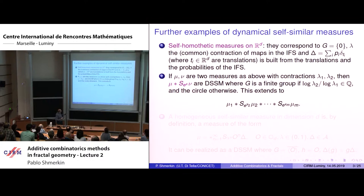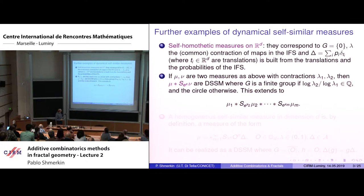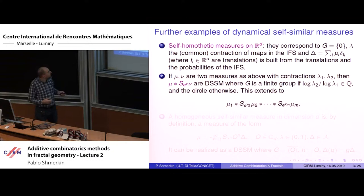Yesterday I explained that if we take the natural measure on a p-Cantor set, the natural measure on a q-Cantor set, convolve them — and even scale one of the measures by some factor — then this fits into the framework of dynamical self-similarity. Suppose we have two contraction ratios, for example 1/p and 1/q, and take the convolution of two such measures. This is again a dynamical self-similar measure where the group depends on the properties of the ratio of the logarithms. If the ratio of the logarithms is irrational, the group is the circle; if it's rational, the group is a finite group; if it equals 1, the group is trivial.